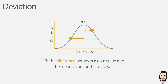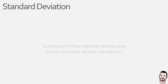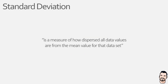So a key question now is: what is the standard deviation? Well, it is a measure of how dispersed or spread out data values are from the mean value of a particular data set. To simplify this, we could almost look at it as a kind of average of all the individual deviations within a data set.